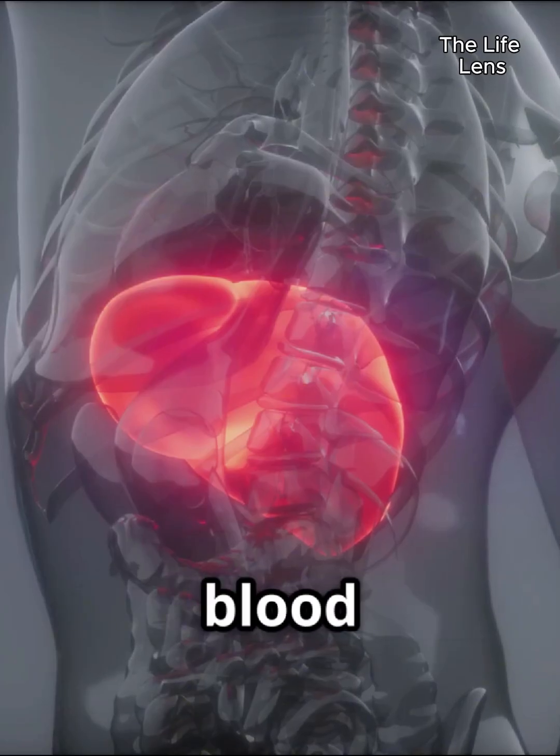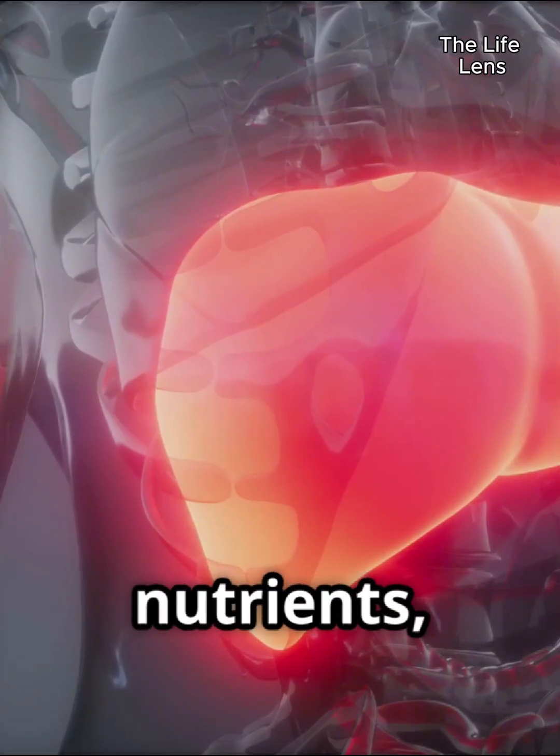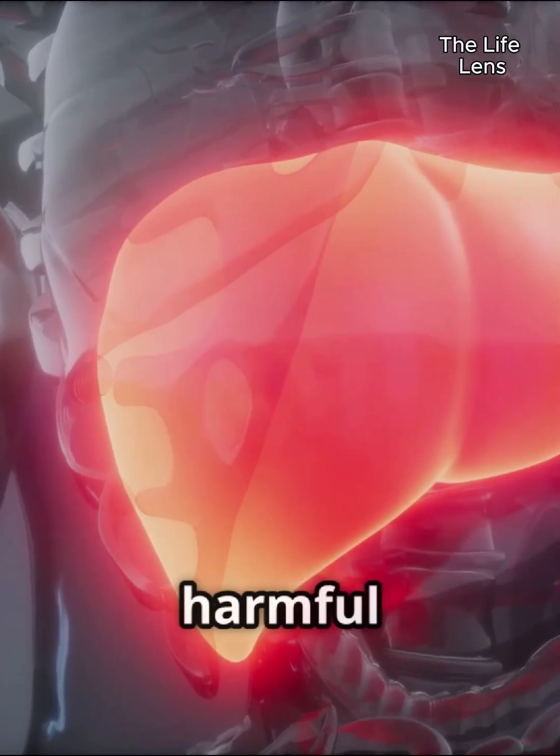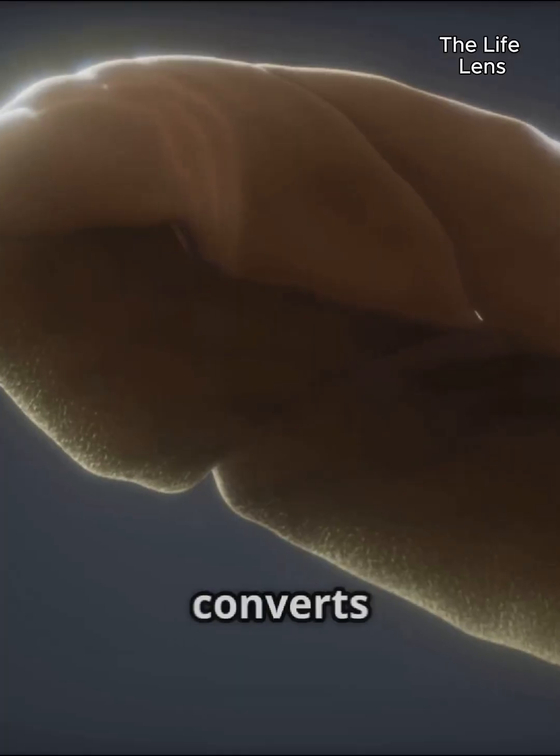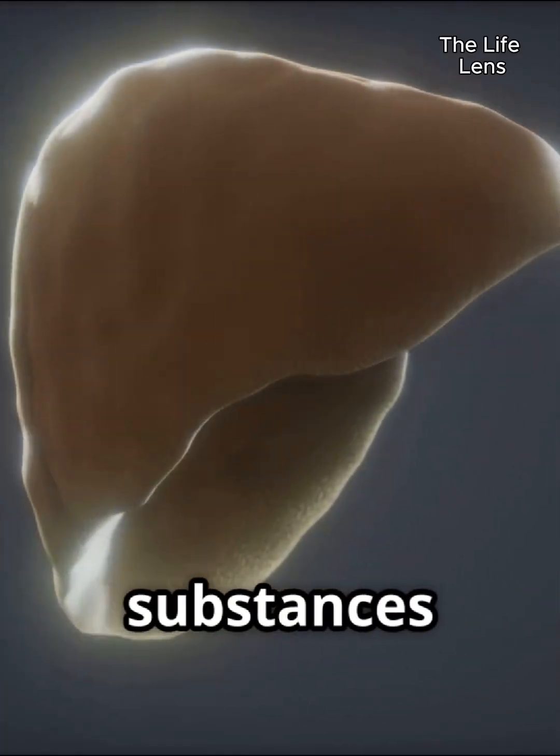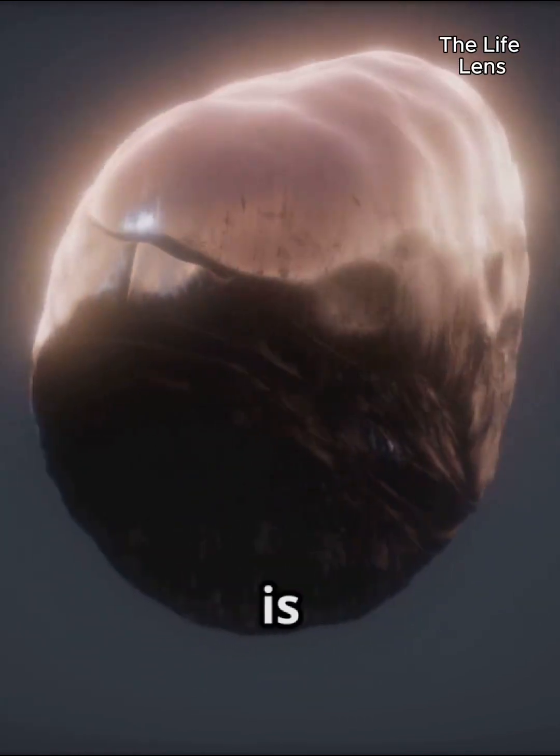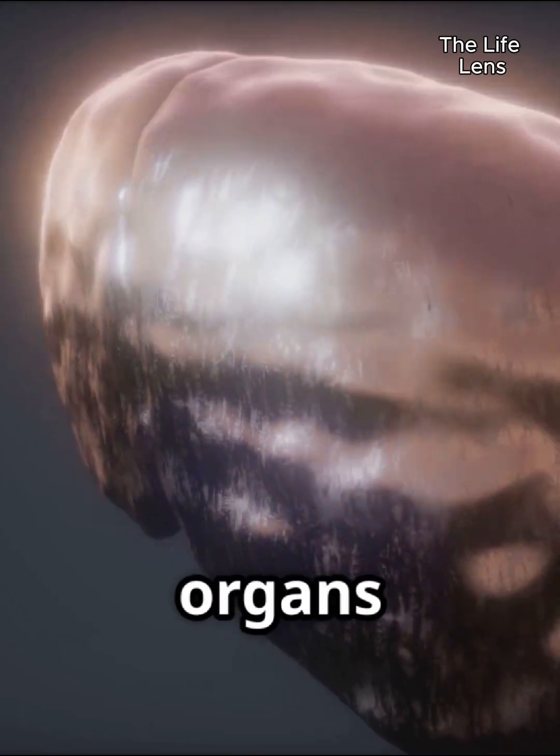One of the liver's most well-known roles is detoxification. Every drop of blood leaving your stomach and intestines passes through the liver. Here, it processes nutrients, metabolizes medications, and critically, neutralizes and removes harmful substances like alcohol, drugs, and metabolic waste products. It converts these toxins into less harmful substances that can then be excreted from the body. This constant filtering process is essential for keeping your internal environment clean and stable, protecting other organs from damage.